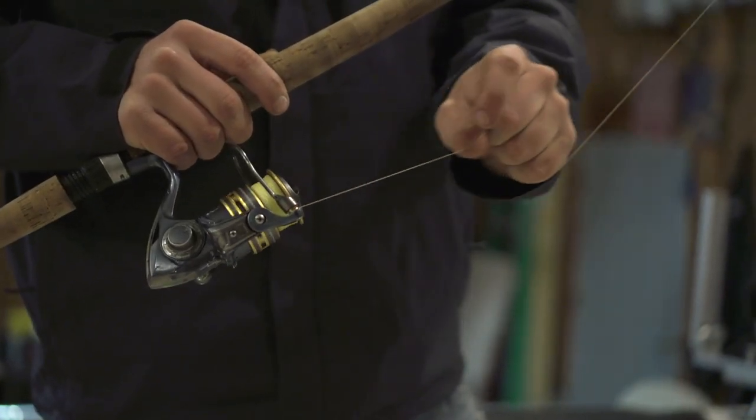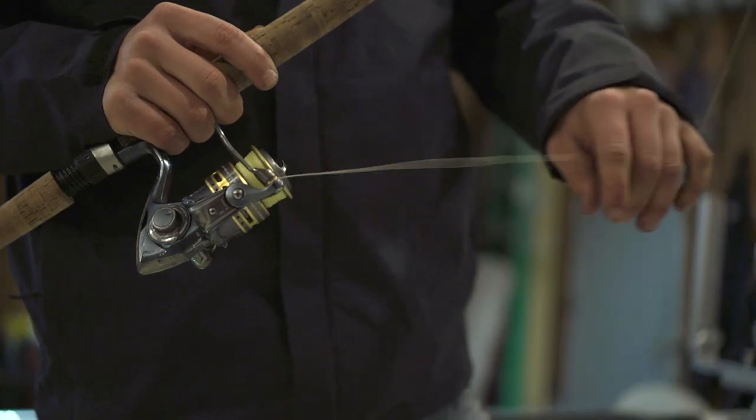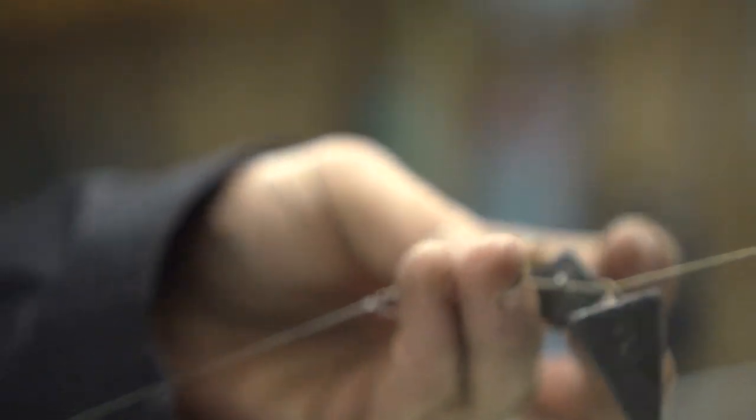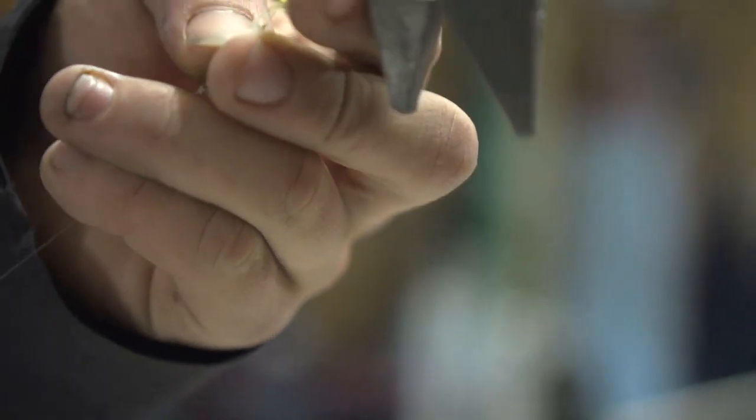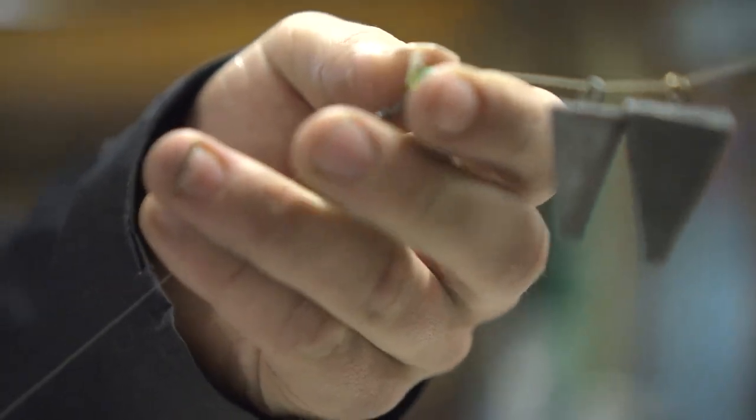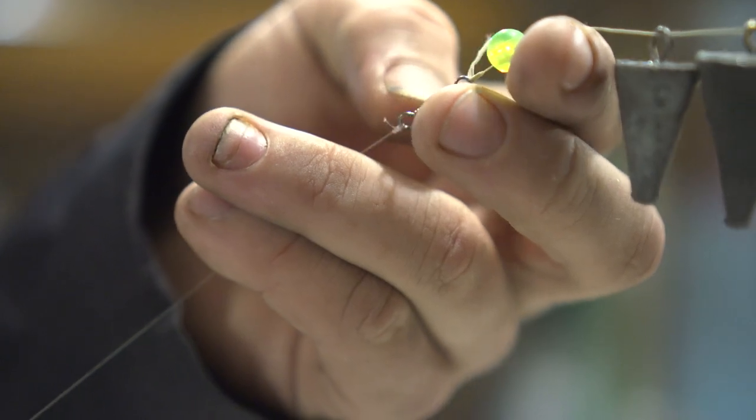You have a 10 to 15 pound braid, throw your sinkers on there, throw a bead to keep it from slamming into your knot so that just seats right there. Use a ball bearing swivel.